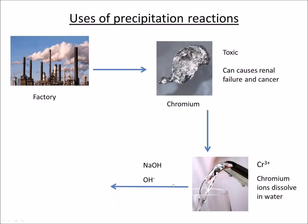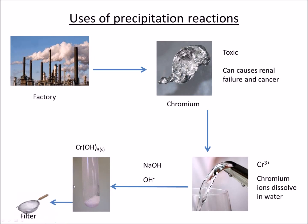We need a source of hydroxide ions, and that can come in the form of sodium hydroxide. The chromium hydroxide that's then formed is very insoluble, and this can easily be filtered off, which therefore removes any chromium ions from the water.